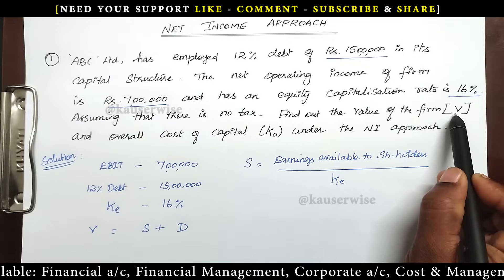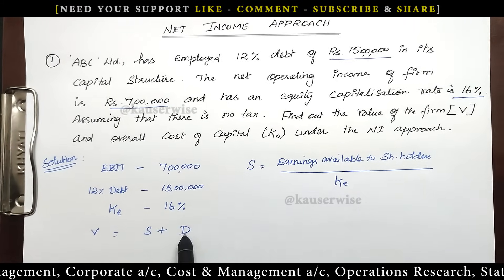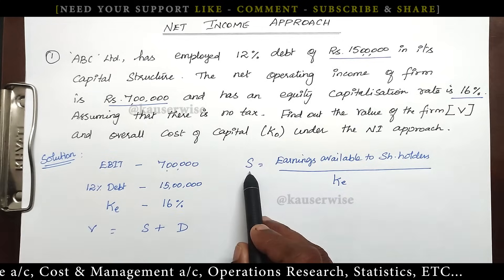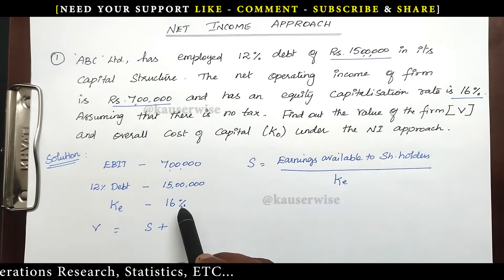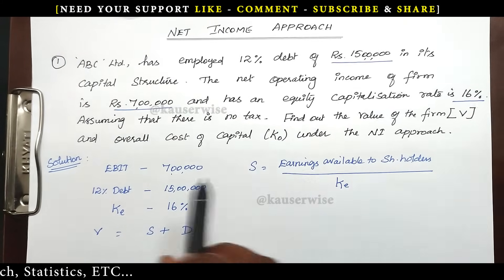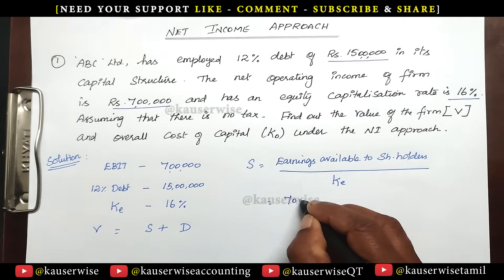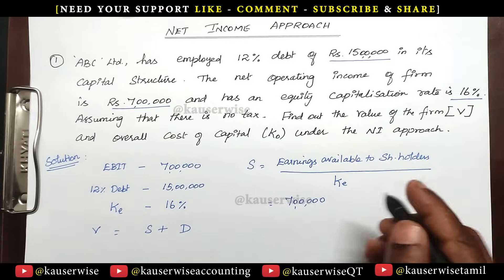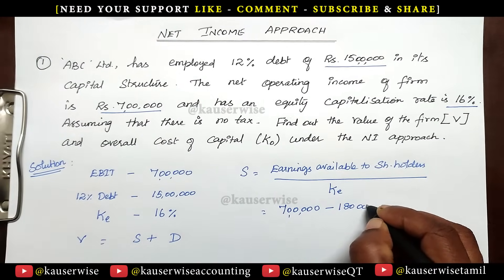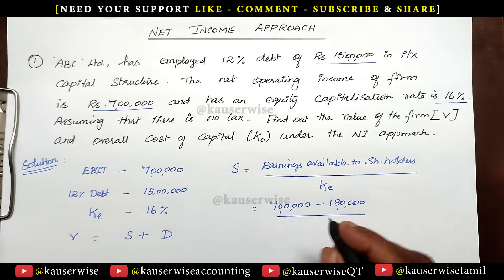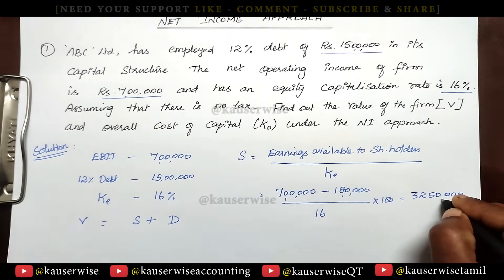The formula for value of the firm is V = S + D. First we need to find S, the market value of equity shares, using: earnings available to equity shareholders divided by cost of equity. To find earnings available to shareholders: EBIT minus interest on debenture. EBIT is ₹7 lakhs. Since there is no tax, we only subtract interest — 12% on ₹15 lakhs equals ₹1,80,000. So S = (₹7,00,000 − ₹1,80,000) / 16% = ₹5,20,000 / 0.16 = ₹32,50,000. This is the market value of shares.